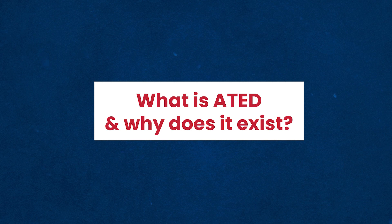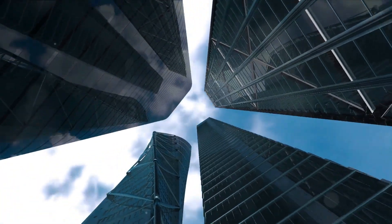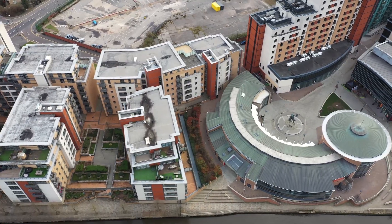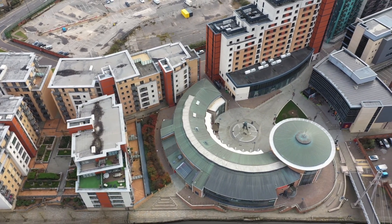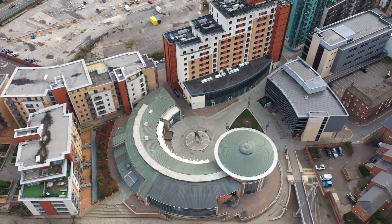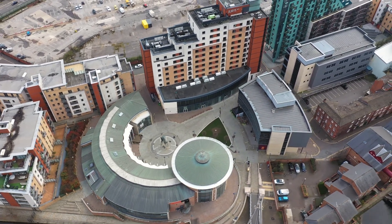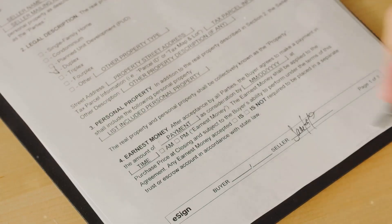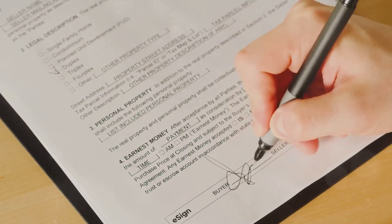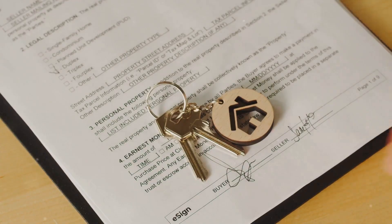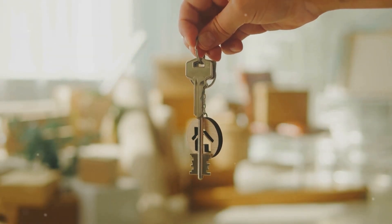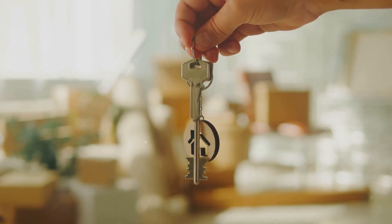So what is ATED and why does it exist? ATED stands for Annual Tax on Enveloped Dwellings. It was introduced in 2013 to discourage the use of corporate structures to avoid or reduce the tax liability on high-value residential properties in the UK. The idea is that, by taxing the entity that owns the property rather than the individual who lives in it, the government aimed to make it less attractive to hold high-value property indirectly through a company.